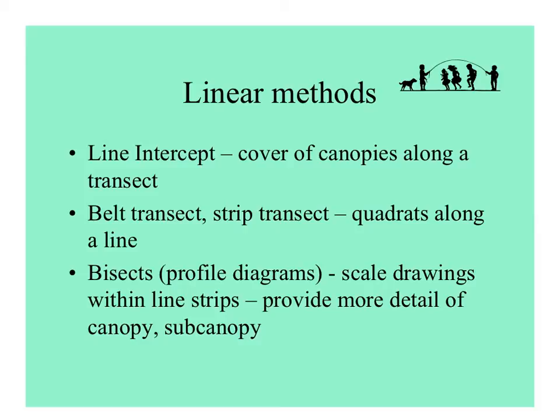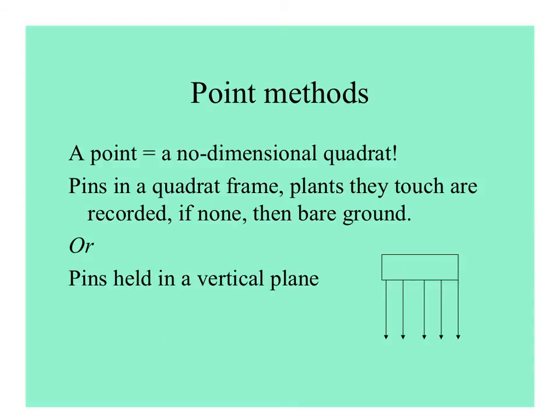Bisects — profile diagrams and scale drawings within line strips — can provide more detail of the morphology and shape of the canopy and subcanopy. One method used where plants are really tiny is the point method. A point is a quadrat of no dimensions: pins are put down into the ground in some kind of frame, and the plants they touch are recorded. If the pins touch bare ground, then there's no plant there.